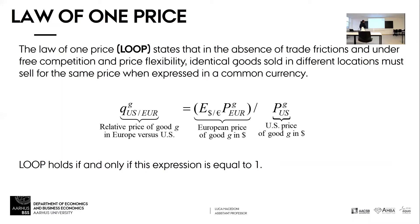What we're having here is that basically the relative price of the European good vis-a-vis the price of the same good in the US must be equal to one if this law of one price holds.